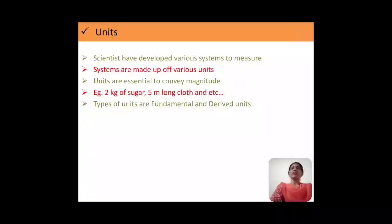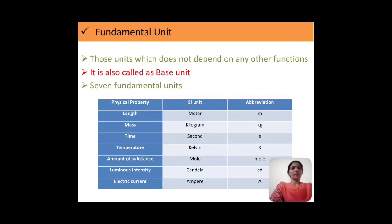Now, to measure any physical quantity, we require certain types of units. For example, if I want sugar, then I have to use the unit as kg. To determine the length, we should use the unit as meter. So units are essential to convey the magnitude. Basically, the units are of two types: fundamental and derived units. Fundamental units are those units which do not depend on any other functions. They are also called as base units. Fundamental units are of seven types.